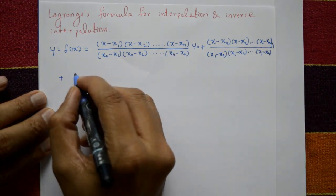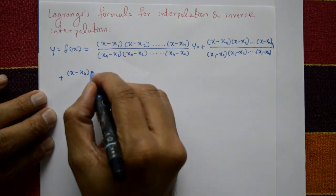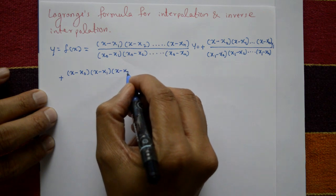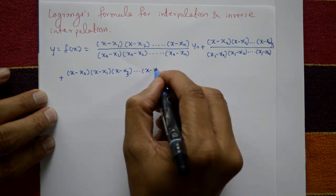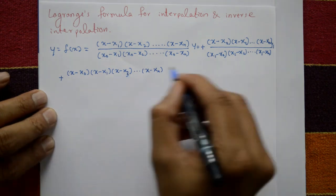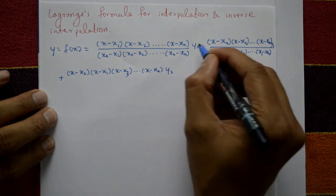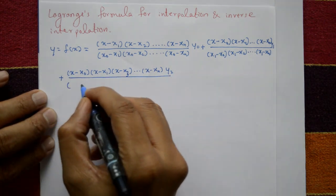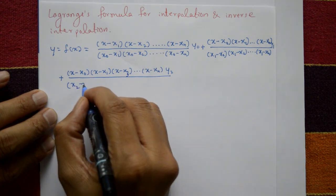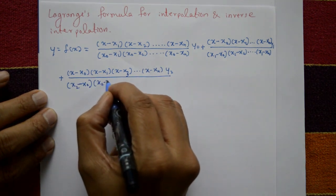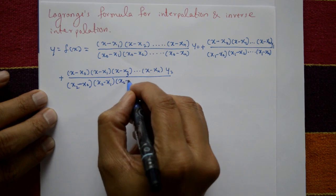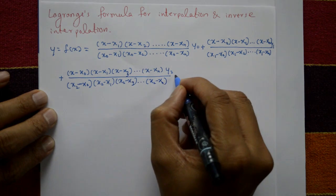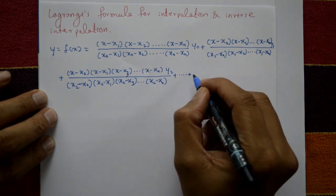Plus the third term: x minus x naught, into x minus x1, into x minus x3, and so on x minus xn, multiplied by y2, divided by x2 minus x naught, x2 minus x1, x2 minus x3, and so on x2 minus xn. Plus and so on up to the last term.